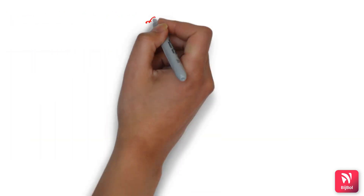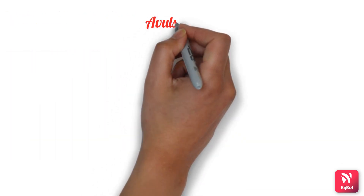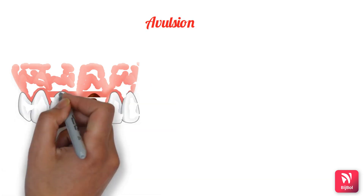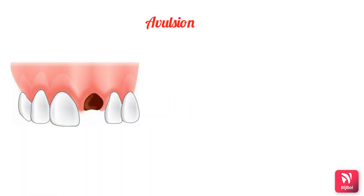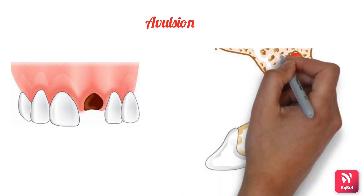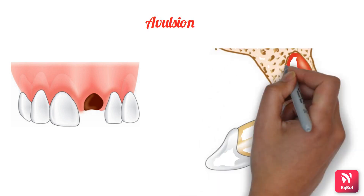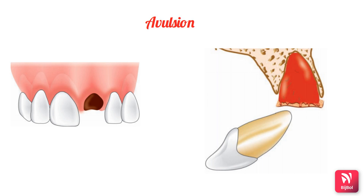Avulsion, also called exarticulation or total luxation, involves complete displacement of the tooth out of the socket. The common cause is a direct force sufficient to overcome the bond between the affected tooth and the periodontal ligament within the alveolar socket.